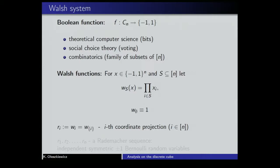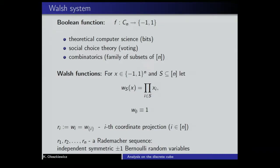In literature, the Walsh functions indexed by singletons {i} are often denoted r_i and called Rademacher variables — or, in probabilistic language, independent symmetric ±1 Bernoulli random variables. This is yet another way to view the discrete cube: as a product probability space, where r_i's are nothing else than coordinate projections — marginal measures. Because this is a product measure, these projections will be independent random variables.